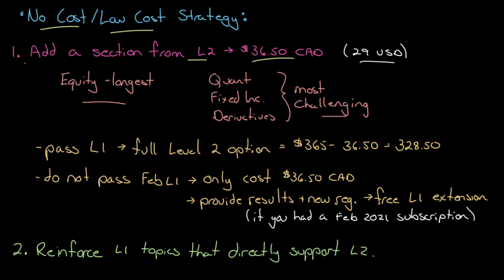There are two outcomes at the end of April. Outcome number one is you pass Level 1. So you're going to add the full Level 2 option for $365, but you've already paid $36.50. So you'll only pay the difference. That is the no-cost part of the strategy. In other words, it didn't cost you anything because you're paying the same $365 you would have paid anyways.